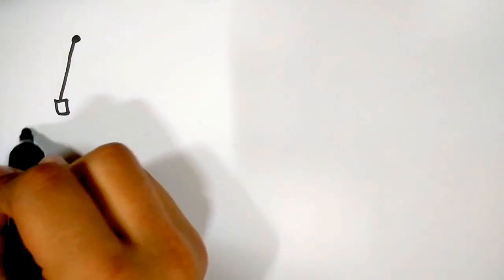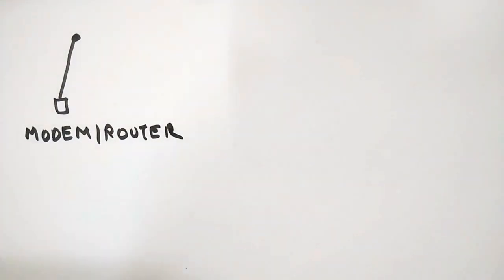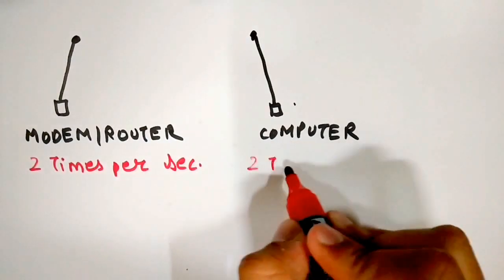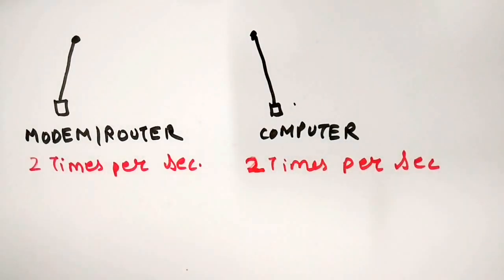To simplify this process, we can look at the Wi-Fi router as an antenna that vibrates at a certain frequency for a certain piece of data. Your computer also has a similar antenna that vibrates at the exact same frequency as that of the router and thus the data from the internet is transferred to your computer wirelessly.